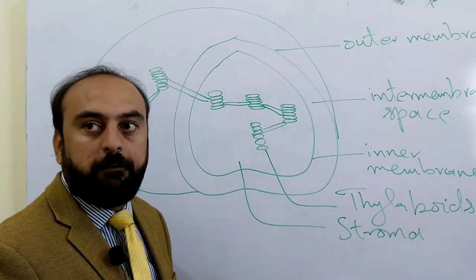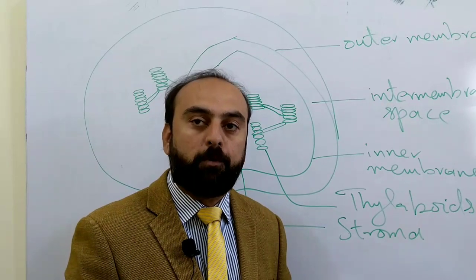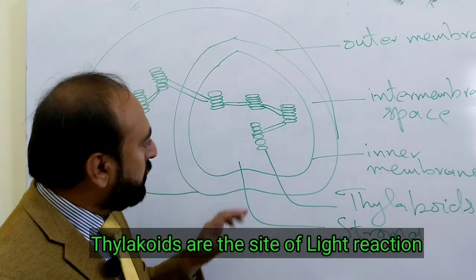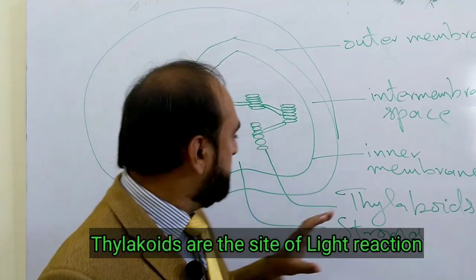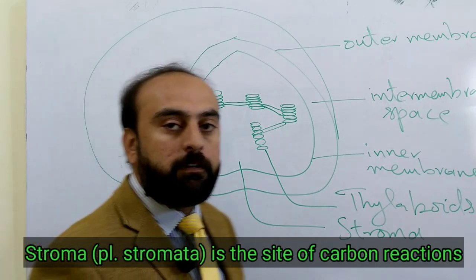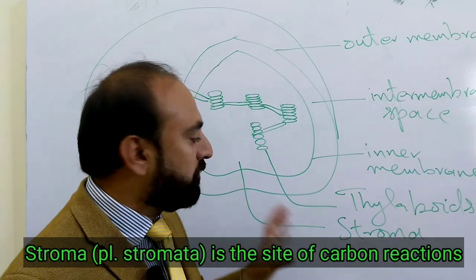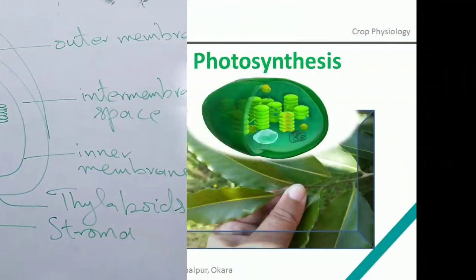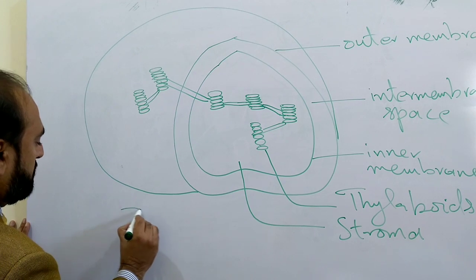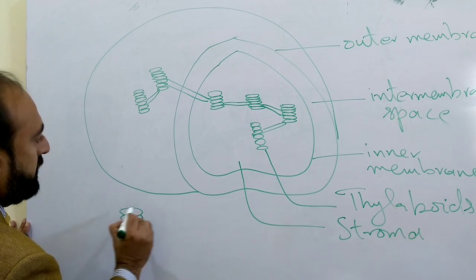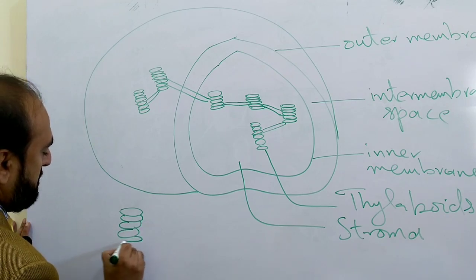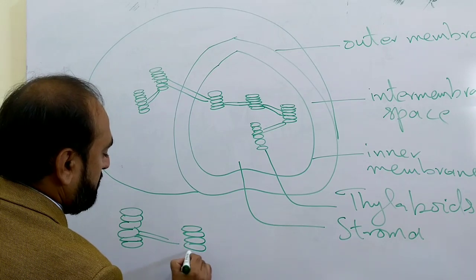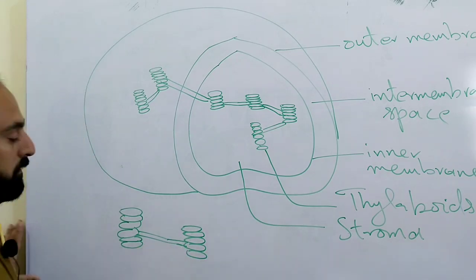These flattened vesicles house protein complexes for light-driven reactions and for energy transduction. Thylakoids are the site of the light reaction, whereas the stroma is the site of the dark reaction or carbon reaction. The stroma contains water-soluble enzymes which play their role in the dark reaction. These thylakoids can be further divided into two domains.